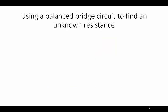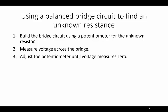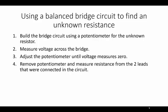Let me go back to using an example of a balanced bridge circuit to find an unknown resistance. First, you'd build the bridge circuit using a potentiometer for the unknown resistor. You'd measure the voltage across the bridge. You could adjust the potentiometer until the voltage measures zero. Then you'd just remove the potentiometer and measure its resistance from the two leads that were connected in the circuit.